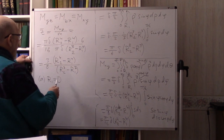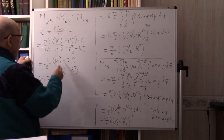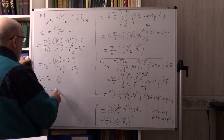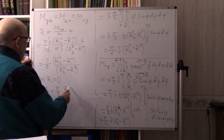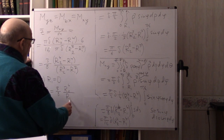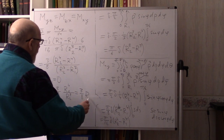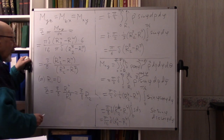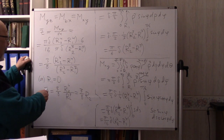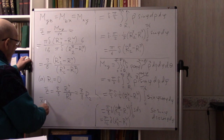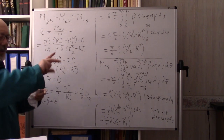In this case z̄ = (3/8)(R₂⁴/R₂³) = (3/8)R₂. And by symmetry x̄ = ȳ = z̄ = (3/8)R₂.